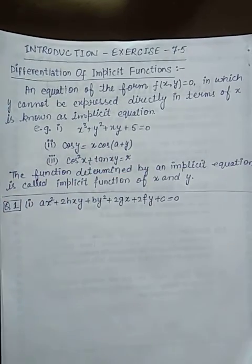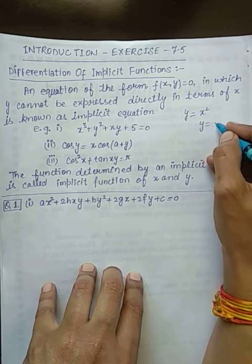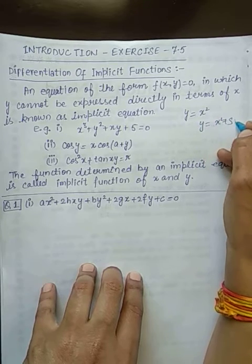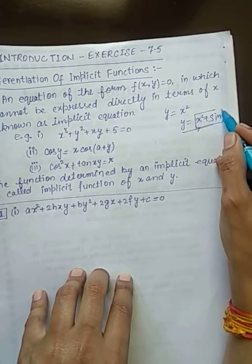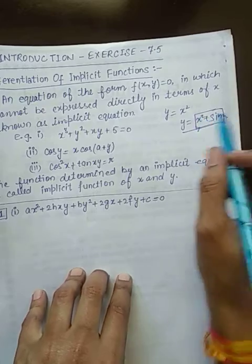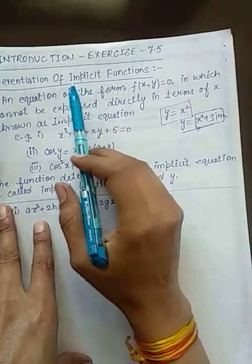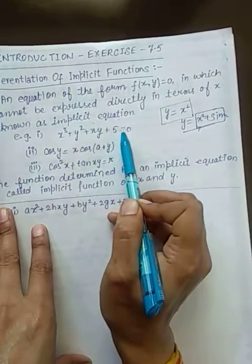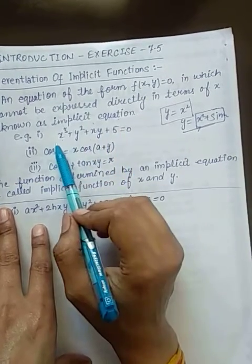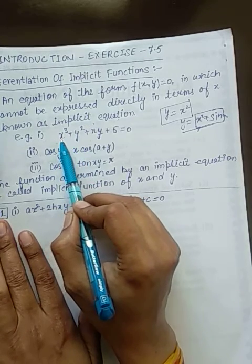For example, jaise hame likhte hai y = x² or y = x² + sin x. In wali examples me aap kya kar rahe ho, y ko directly express kar rahe ho in the form of function of x. But aise equation jis me aap is tarah se nahi kar paho ge, un wali equations ko aap kehte hai implicit equation.